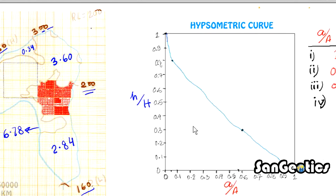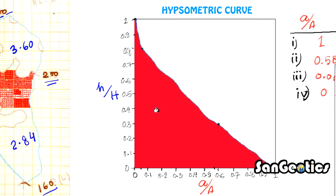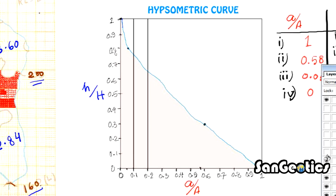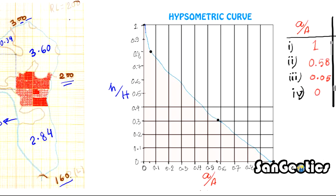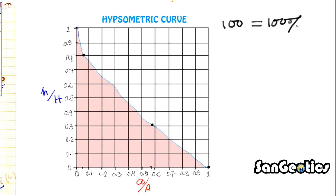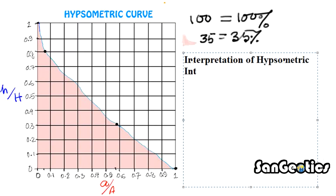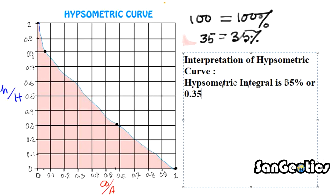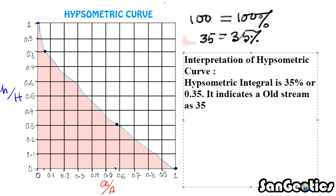Now we interpret the curve with the help of the hypsometric integral by calculating the proportion lying below the curve relative to the total square graph. We draw horizontal and vertical lines to count boxes. The total is 100 boxes representing 100% of the square graph area. Below the curve, the number of boxes is 35, meaning 35% or 0.35. The hypsometric integral is therefore 0.35, indicating an old stream, as 35% of the basin landmass is in the old stage of dissection.